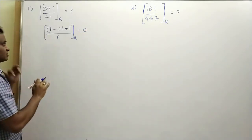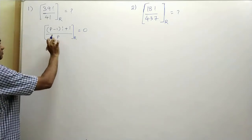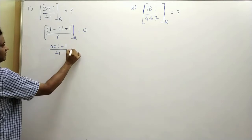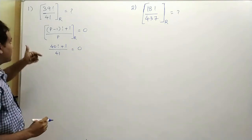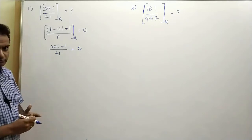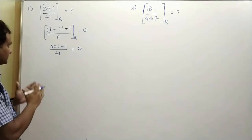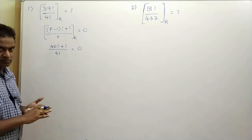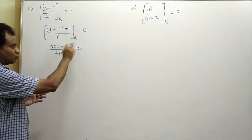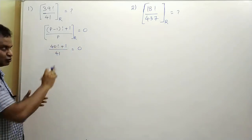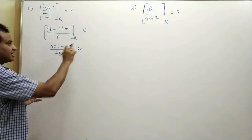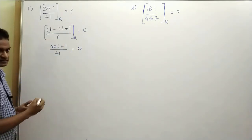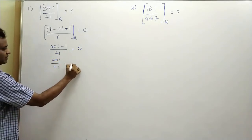Let us substitute p equal to 41 here, because 41 is a prime number, so we can apply Wilson's theorem. Substituting p equal to 41 gives you 40 factorial plus 1, divided by 41, which equals 0 as a remainder. But we need to find when 39 factorial is divided by 41. To simplify this, we need to use modular arithmetic. We can apply additions on both sides for the dividend as well as the remainder — you can subtract, multiply, or raise them to a certain power. So I will take this plus 1 to the other side: 40 factorial when divided by 41 will give you a remainder of minus 1.